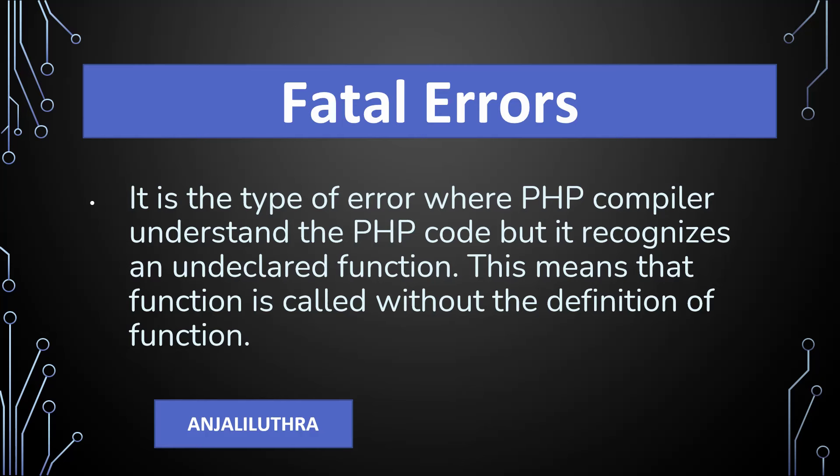Fatal error is a type of error where the PHP compiler understands the PHP code, but you call a function that doesn't exist. We have seen that we can make user-defined functions, and you call the name of that function. But if you have a spelling mistake and the name is wrong, the error will become a fatal error. Fatal error means we are calling a function which is not defined. When it happens, the code will not be executed — PHP will show you an error and stop.